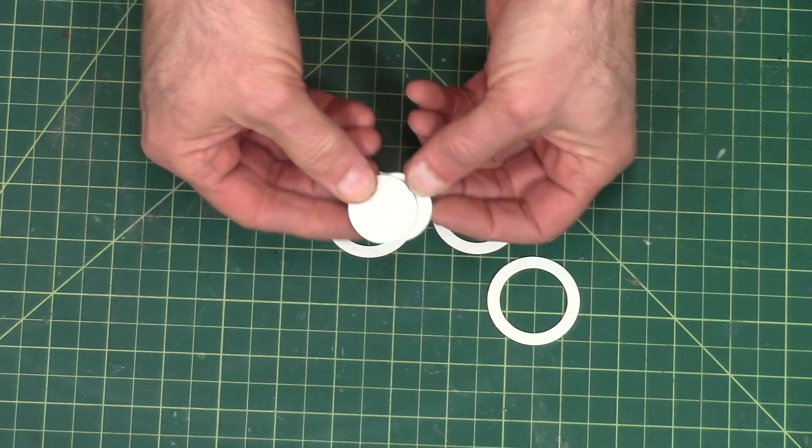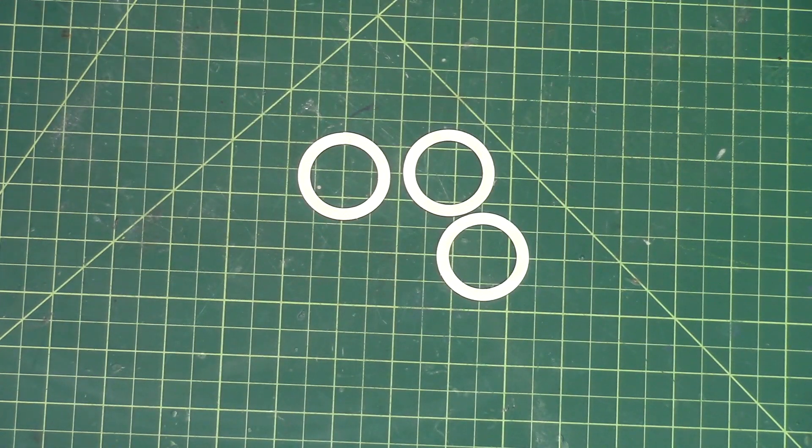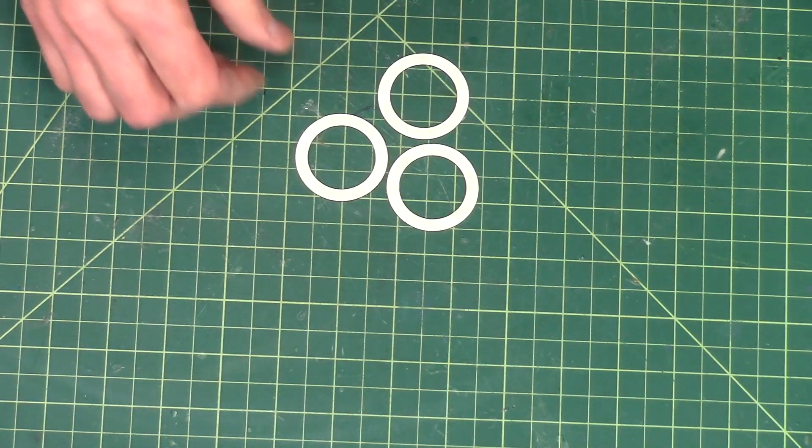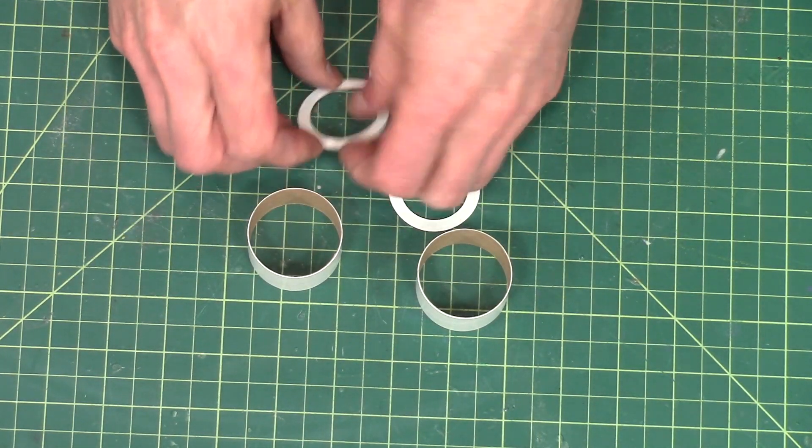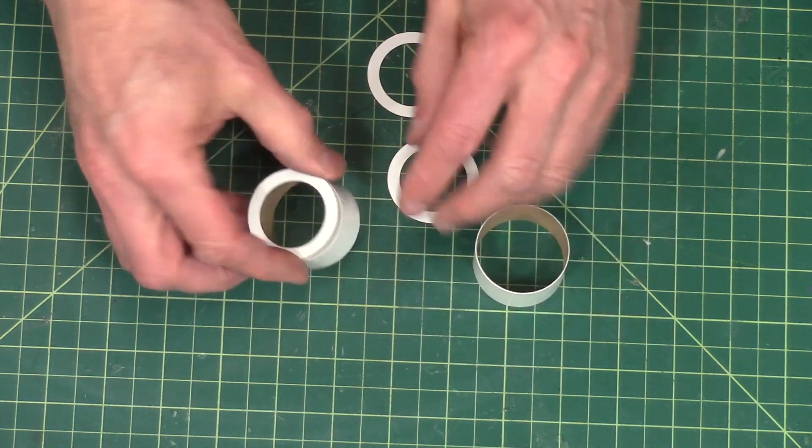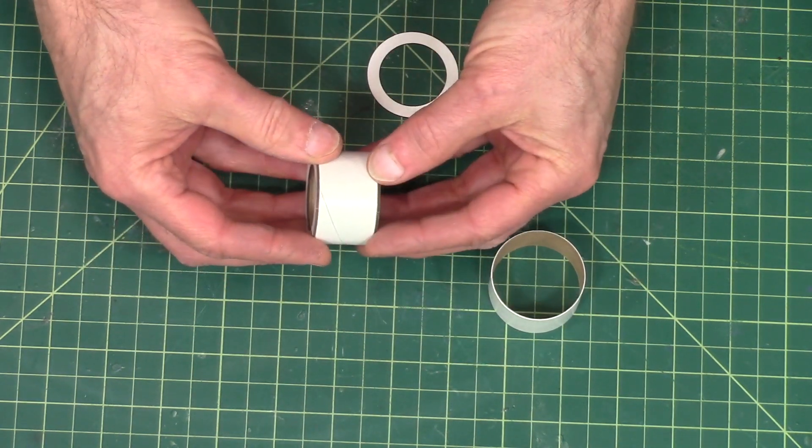All these little discs you don't need so you can just set those aside. Also get out these short rings and we're going to glue each of these to the end, one on each side of both of them.